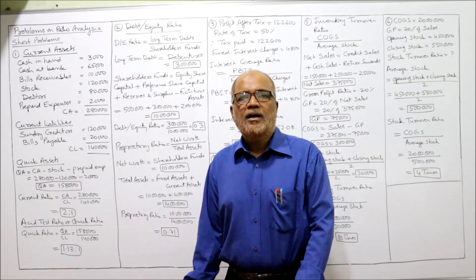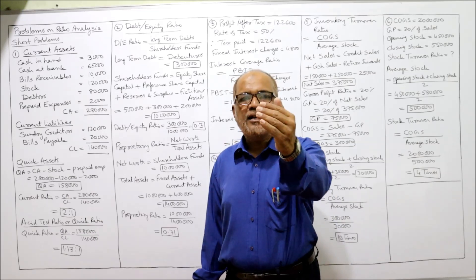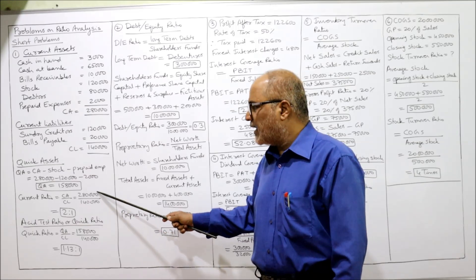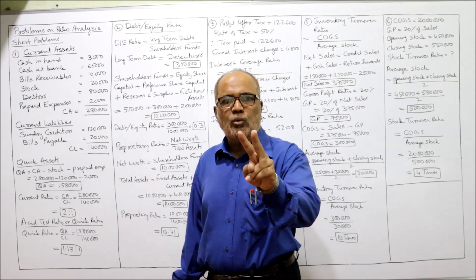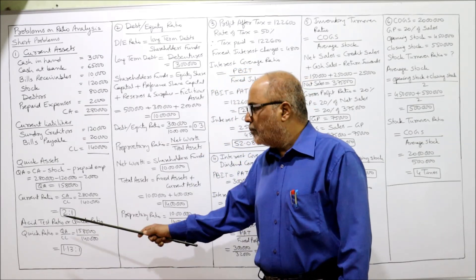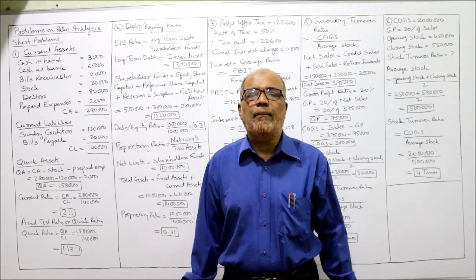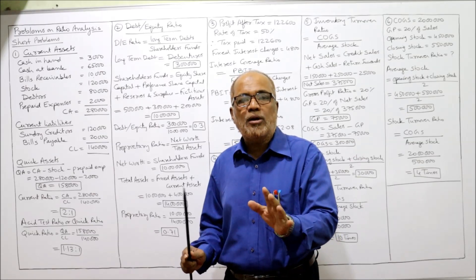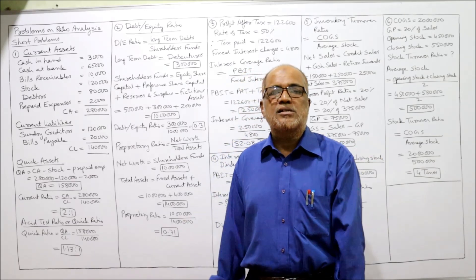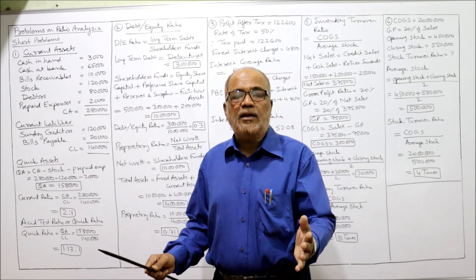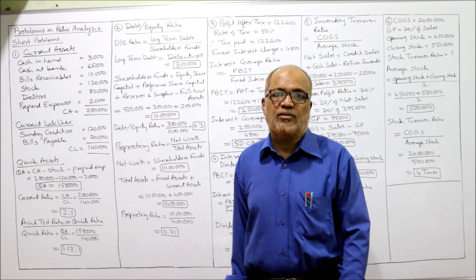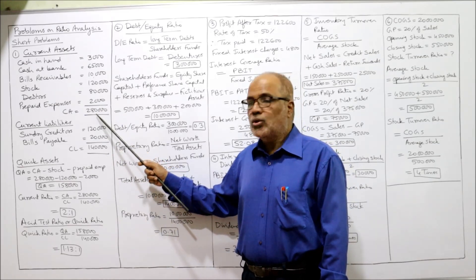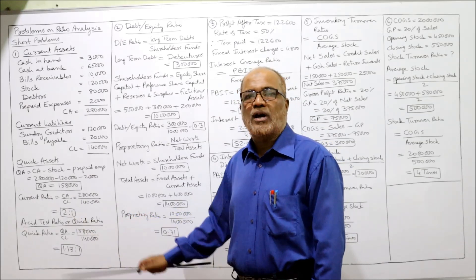Current ratio expresses the relationship between current assets and current liabilities. Formula: current assets divided by current liabilities. So 2,80,000 divided by 1,40,000 equals 2, written as 2:1. This means current assets are double the current liabilities — for every 1 rupee of current liability, we have 2 rupees of current assets. The standard current ratio is 2:1, indicating a good, satisfactory liquidity position.